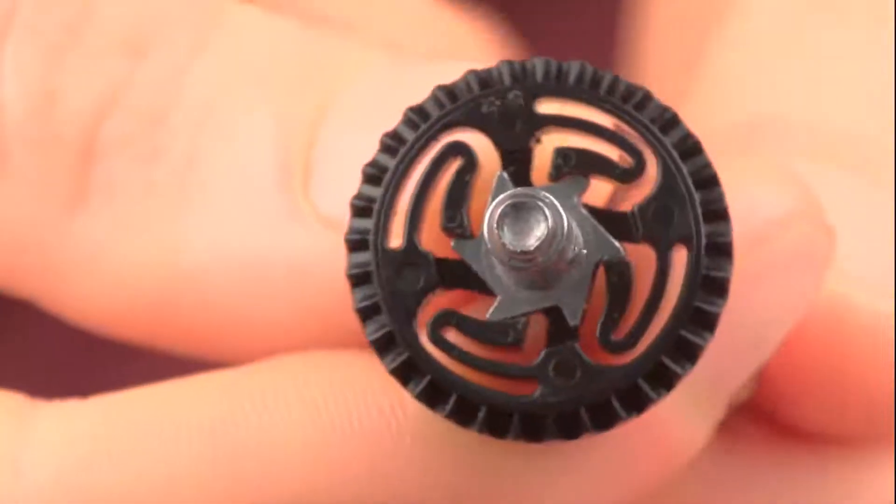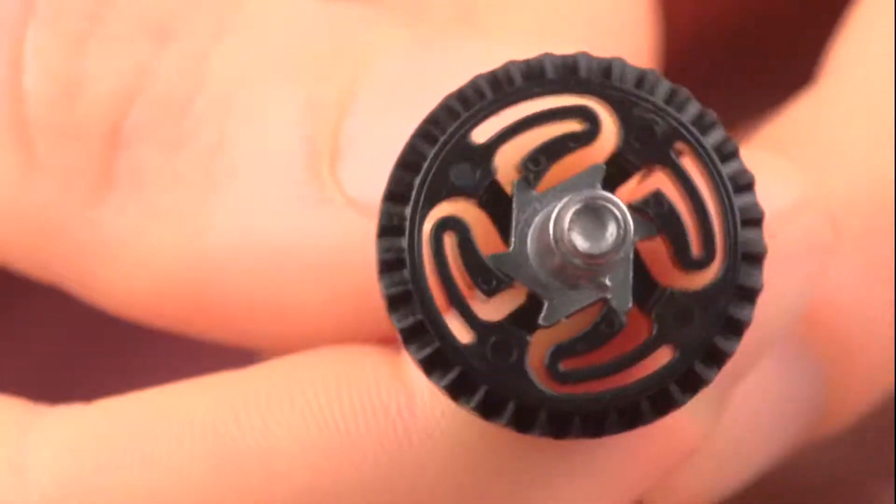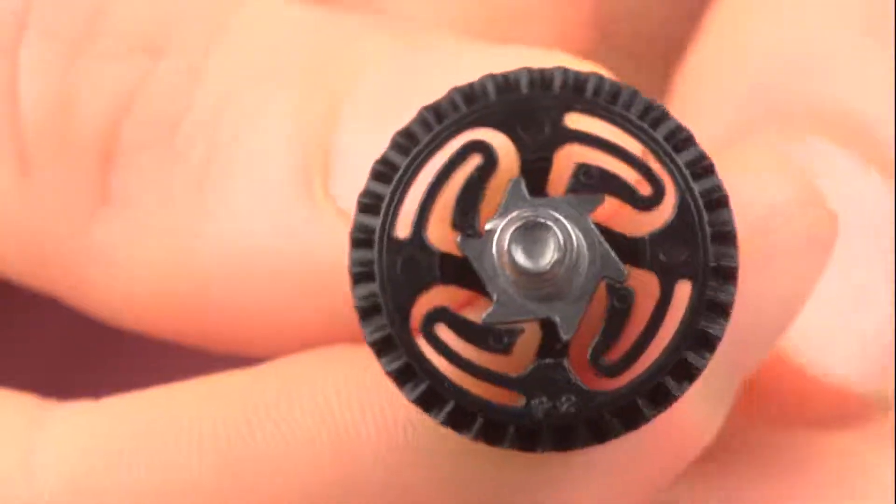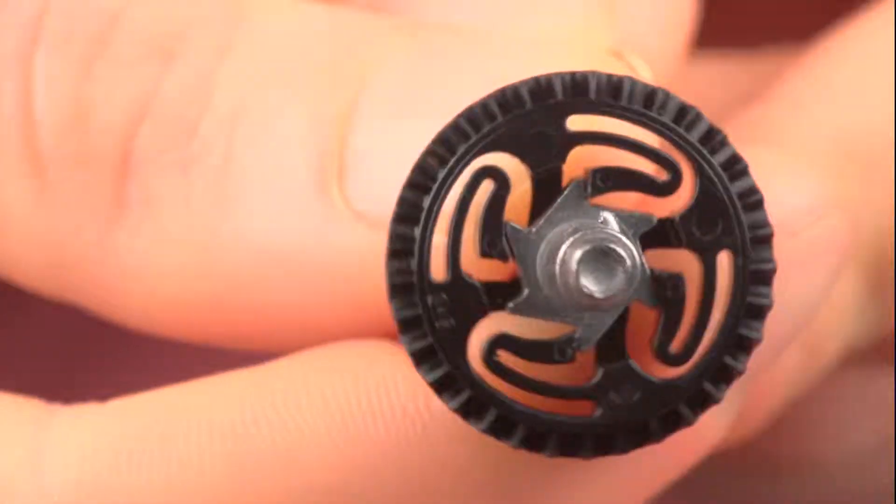When the spring unwinds, the axle turns in the opposite direction and the 6-tooth gear catches the pawls which rotates the larger plastic gear with it. This rotation drives the music box.